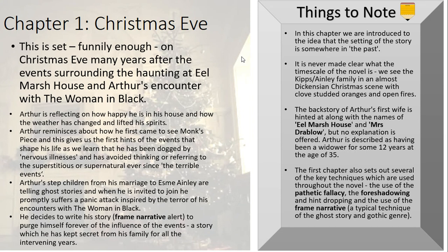We also start to hear the first hints of the backstory. Once we've read the whole story, we can put details into their proper place. We hear that this is Arthur's stepfamily — he married Esme later on, and they were both slightly older. We also hear that Arthur has been a widower for some 12 years at the age of 35, signalling that there is something deep in his past involving a tragic loss. We also get the names Eel Marsh House and Mrs. Drablow thrown out, with no explanation offered — typical Susan Hill fashion, throwing things into the mix and leaving us to pick up on them later.